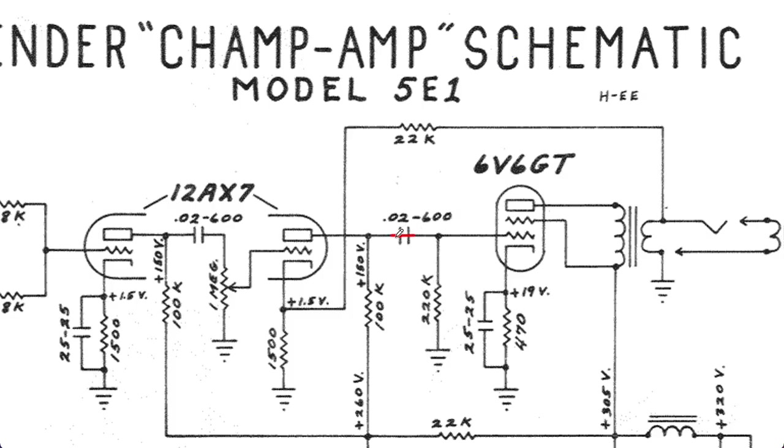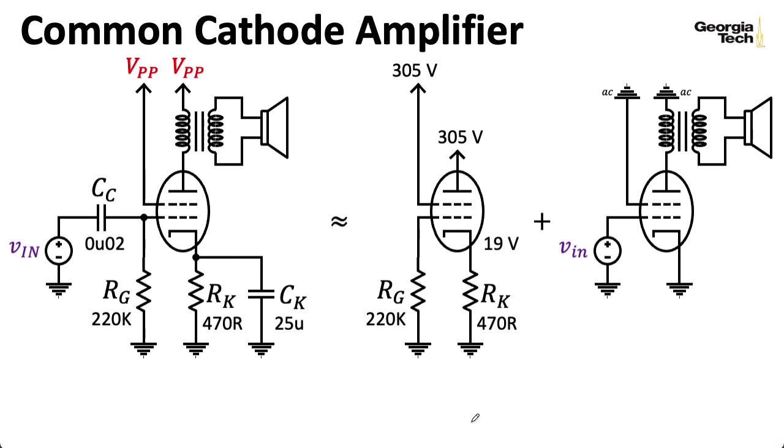In particular, we've been focusing on the 5E1 version of the Fender Champ. Assuming that we can approximate the capacitors here as shorts as far as the signal goes, we can take this part of the circuit here, the power amplifier, and redraw it where I decompose the circuit into its DC bias and small signal aspects. We've previously looked at the DC biasing, and in this lecture, we'll compute the small signal gain.